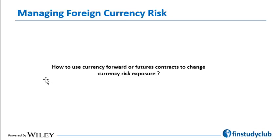An importer purchasing from overseas has purchases and payables denominated in foreign currency and might want to hedge against forex risk. For an exporter receiving foreign currency, it would want to sell foreign currency on a forward basis. For an importer with payables in foreign currency, it would look to purchase foreign currency on a forward basis. The idea is to remove uncertainty in domestic currency cash flows due to exchange rate fluctuations.